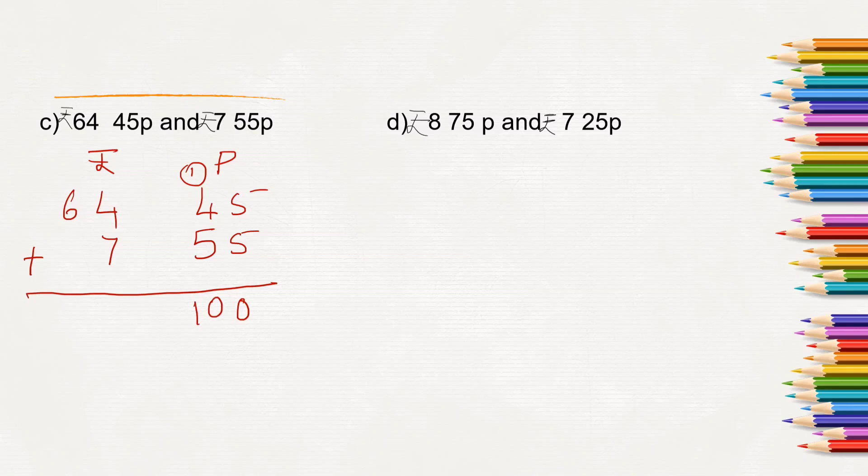Now here 100 paise is equal to 1 rupee, right? So this 1 rupee we will carry to rupees column. So here we will write 0 paise and carry 1 rupee to rupees column. Now 4 plus 1 is 5, 5 plus 7 is 12, 2 here, 1 carry. 6 plus 1 is 7. So here Rupees 72 is the answer.